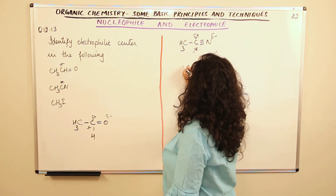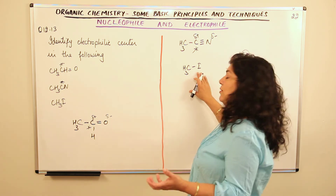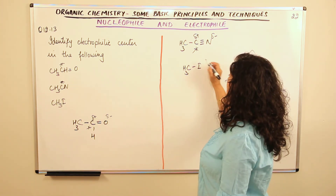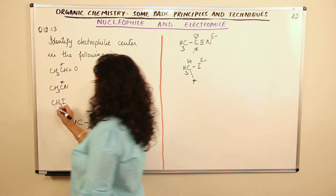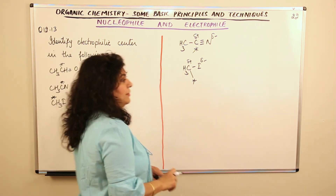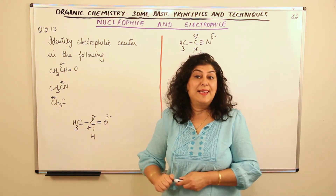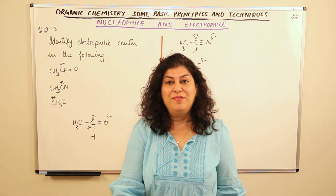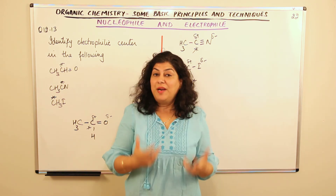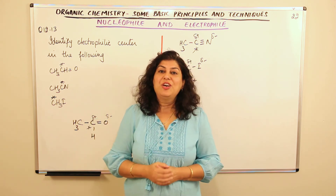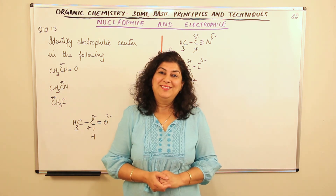The third compound is CH₃I. Iodine is a halogen, and halogens are more electronegative than carbon. So iodine is partially negatively charged and this carbon is partially positively charged. This carbon is therefore the electrophilic center. So with all these compounds, we have identified the electrophilic centers. That concludes today's video covering problems 12.11, 12.12, and 12.13.